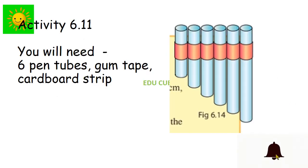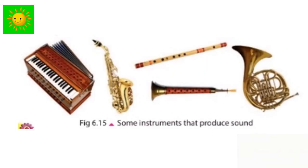In next activity, we need six pen tubes, gum tape, cardboard strips. Cut the pen tubes as shown in the figure in different lengths. Then make a bugle like this. Practice to play it in ascending order and in descending order. Search how the bugle produces sound. This figure shows you some other instruments which produce sound in the same way we discussed earlier, the instruments we produced: flutes, like that.